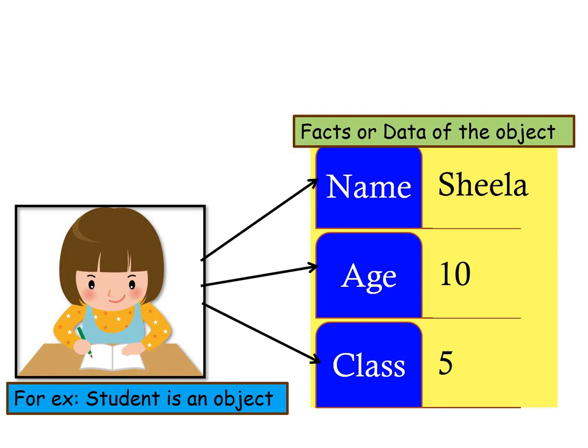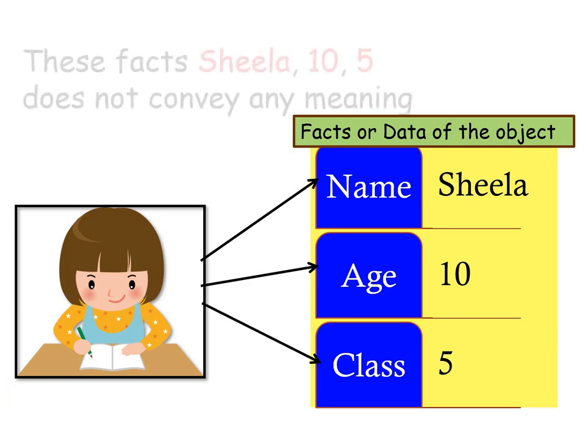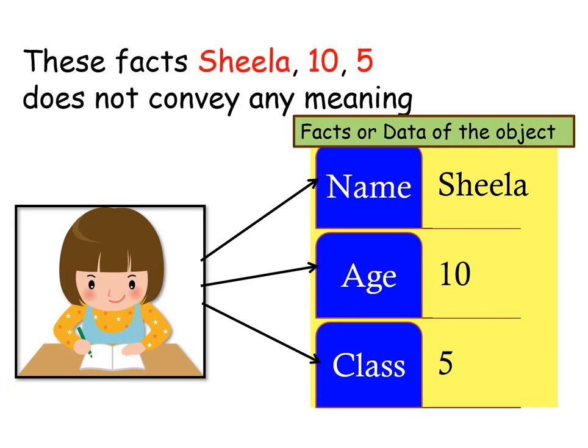We can also identify more facts such as brown hair, green pen, writing, notebook, table. These facts — Sheila, 10, 5 — do not convey any meaning. Why do they not convey any meaning? Because they are unprocessed.